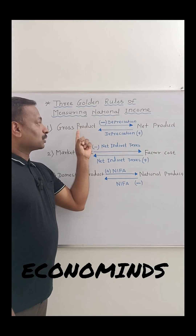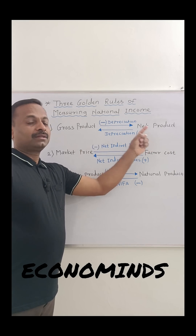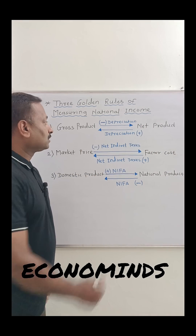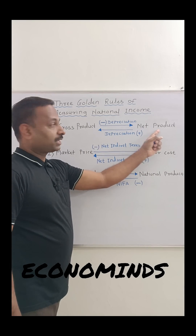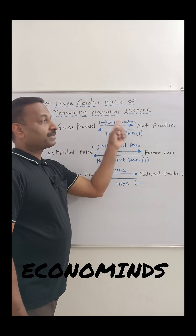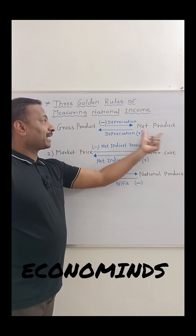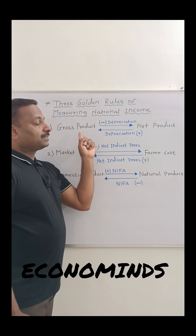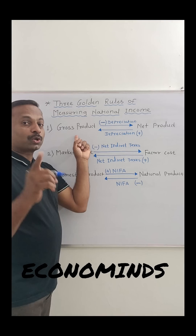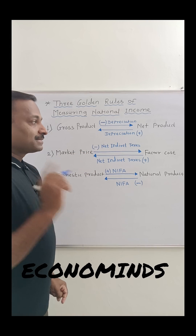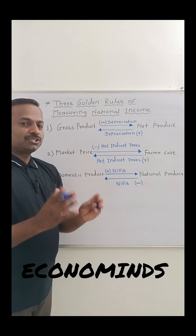The first adjustment is gross product and net product. When gross product is given and we are going to calculate net product, the formula is: gross product minus depreciation equals net product. When net product is given and we need to calculate gross product, simply add depreciation to the net product and you will get gross product.